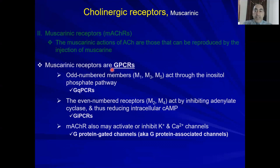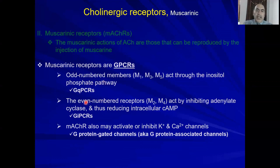There are five subtypes: M1 through M5. The odd-numbered receptors — M1, M3, and M5 — are Gq-PCR. They activate phospholipase C, which splits PIP2 into diacylglycerol and inositol triphosphate. The even-numbered receptors — M2 and M4 — are Gi-PCR. They inhibit adenylate cyclase and thus reduce the amount of cyclic AMP.